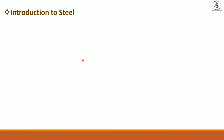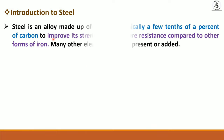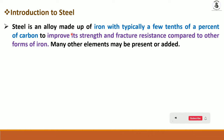Starting with the introduction about steel: steel is made up of iron with typically a few tenths of a percentage of carbon. Up to two percentage of carbon being present with iron forms steel material, and different percentages of carbon alloying with iron forms different kinds of steels.